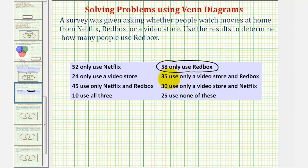Right below this, notice that 35 use only a video store and Redbox. These are not the same users as the 58 that just use Redbox, but they are Redbox users, and therefore they should be counted.